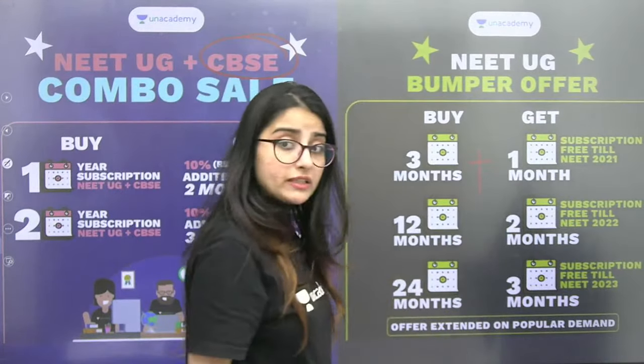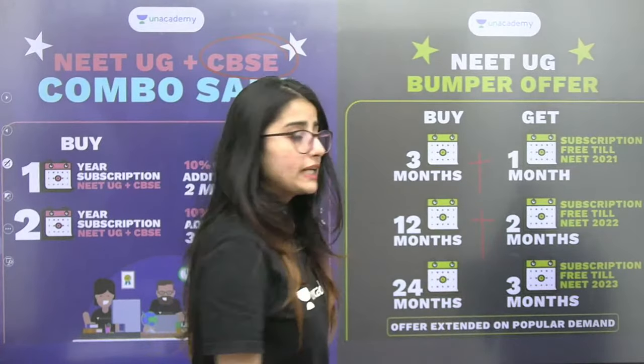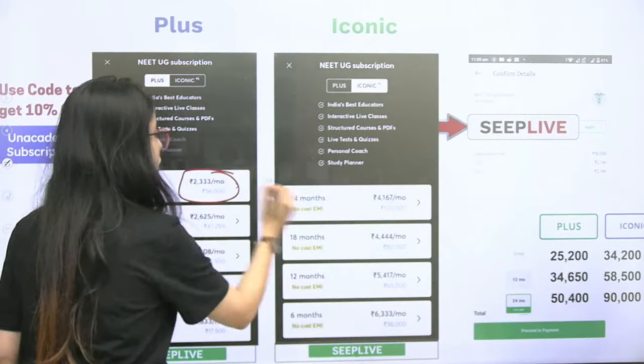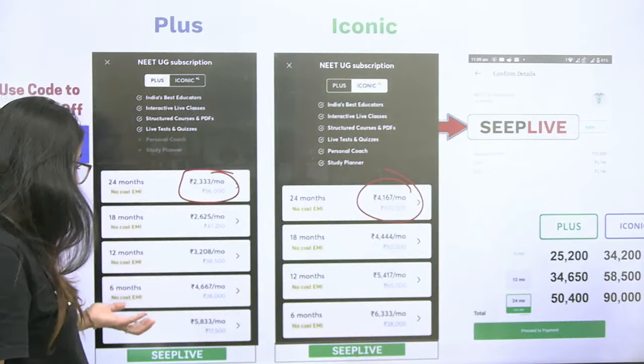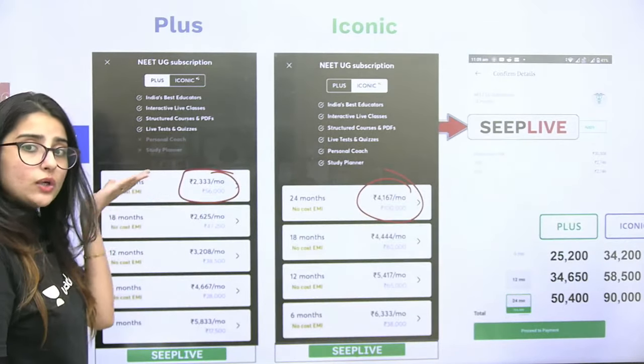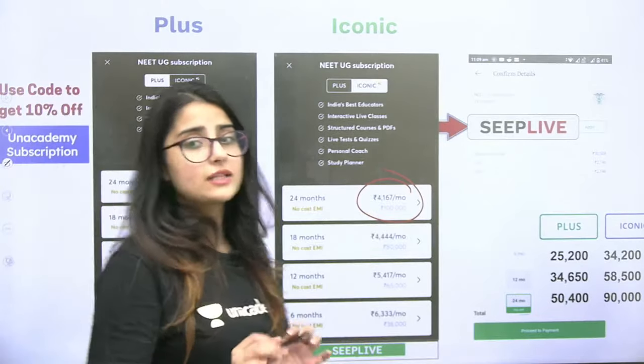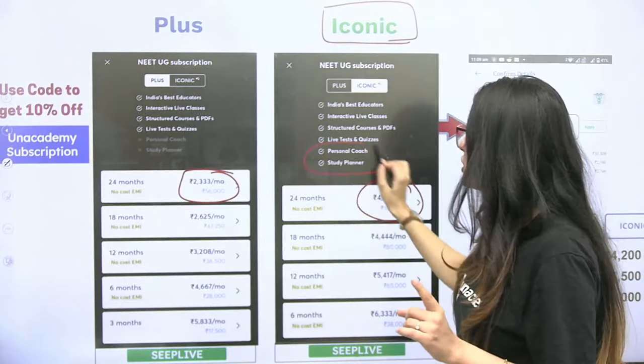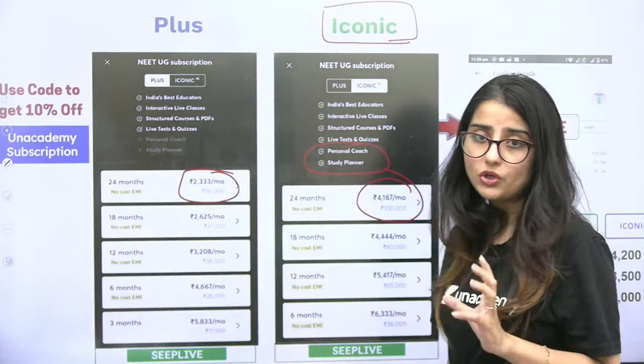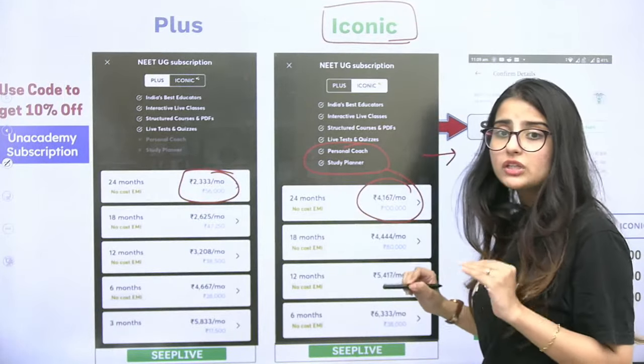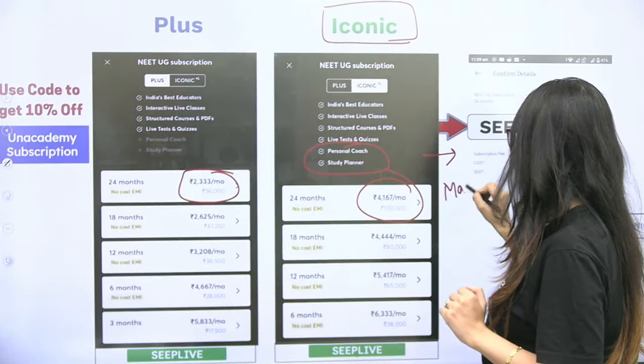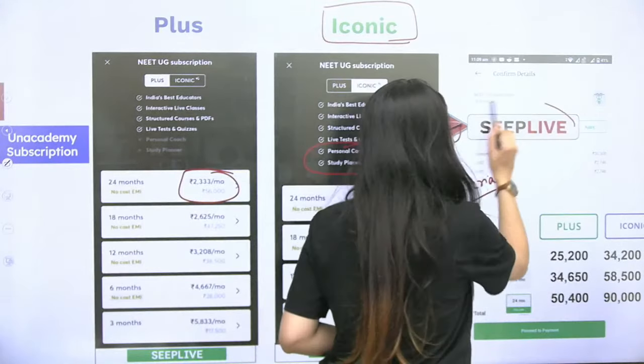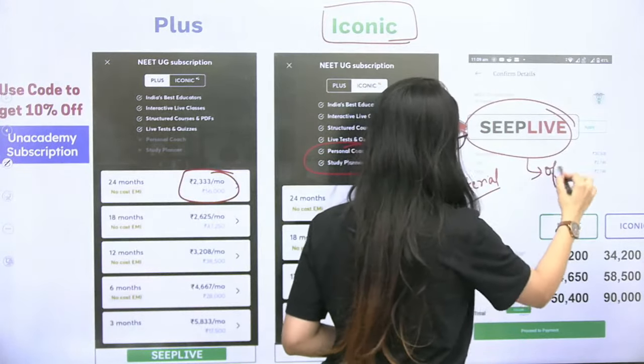If you take NEET 3 months, you get one month free. 12 months, you get two months free. And 24 months, you get three months free. This is your per month cost for Plus as well as Iconic subscription. You will see that the per month cost for bigger courses is less. So you can join with me. If you ask me, the best type of subscription is Iconic. Why Iconic? Because here you will get a personal coach, a study planner, which you don't get in Plus, which is very important. And also, if you take Iconic by 30th of June, you will get printed material. The PDFs that you get, you will get them in printed form.